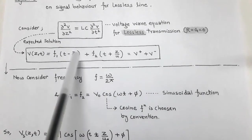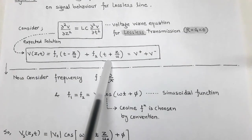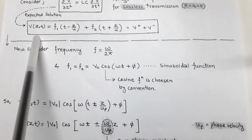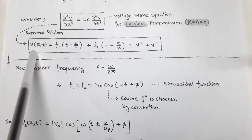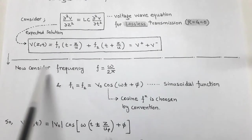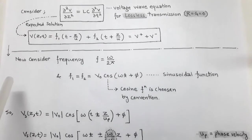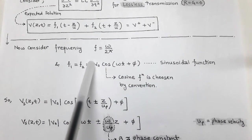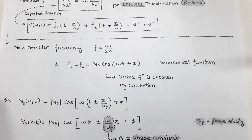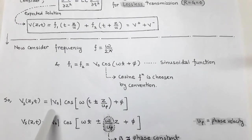In the case of function F1 the argument is (T − Z/U), and in the case of function F2 the argument is (T + Z/U). This expected solution is the voltage function that is the solution of our voltage wave equation. We first convert it into the frequency domain by considering a sinusoidal voltage V_F(Z, T) at frequency f = ω / 2π. We then consider F1 and F2 as sinusoidal functions using the cosine function.